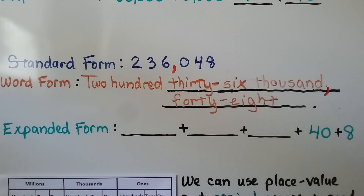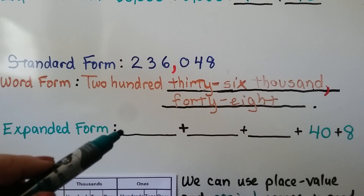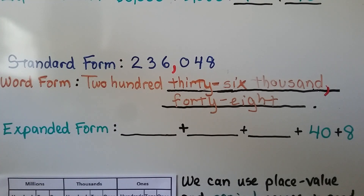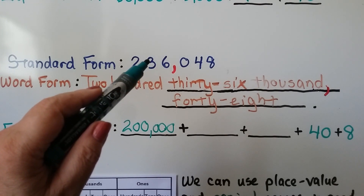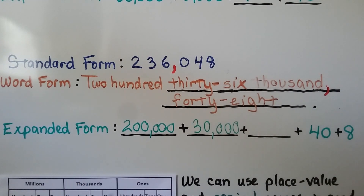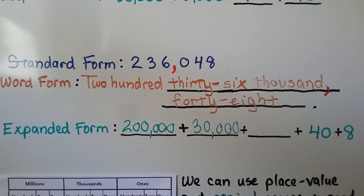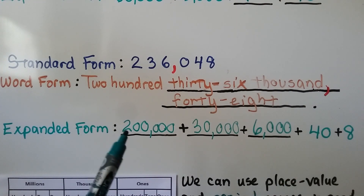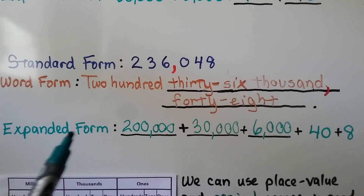Now we need to write it in expanded form. We have two hundred thousand, plus thirty thousand, plus six thousand. And it already gave us the forty plus eight. So the expanded form is: two hundred thousand plus thirty thousand plus six thousand plus forty plus eight.